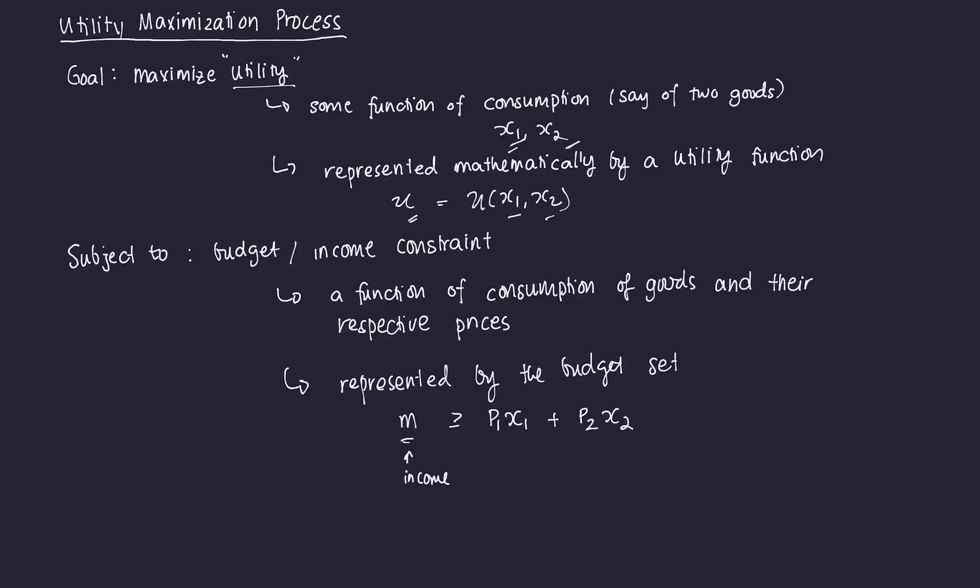As much as a consumer would want to consume many goods and services, he or she is bounded by the amount of budget or income that he or she has. That income is what we refer to as an income or a budget constraint. It can be represented mathematically in a budget set or a budget constraint.